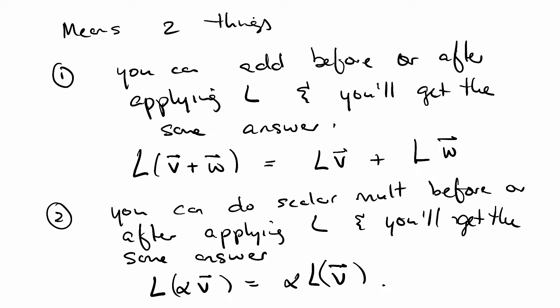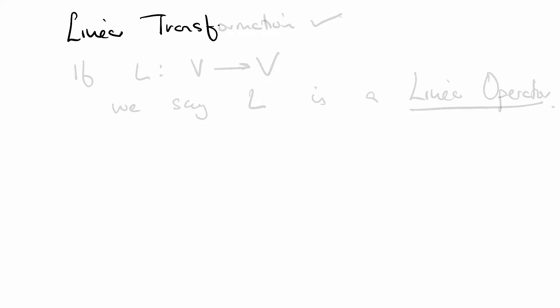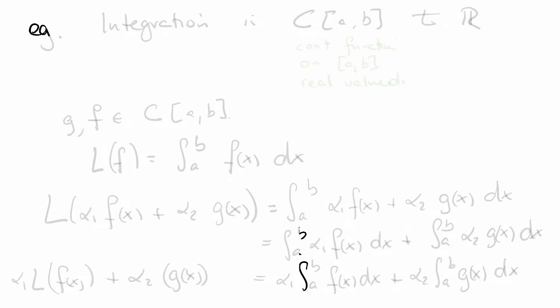So we've got our definition of a linear transformation. And I'll just note that if L is a linear transformation from V to V, we say that L is a linear operator. Let's do some examples.